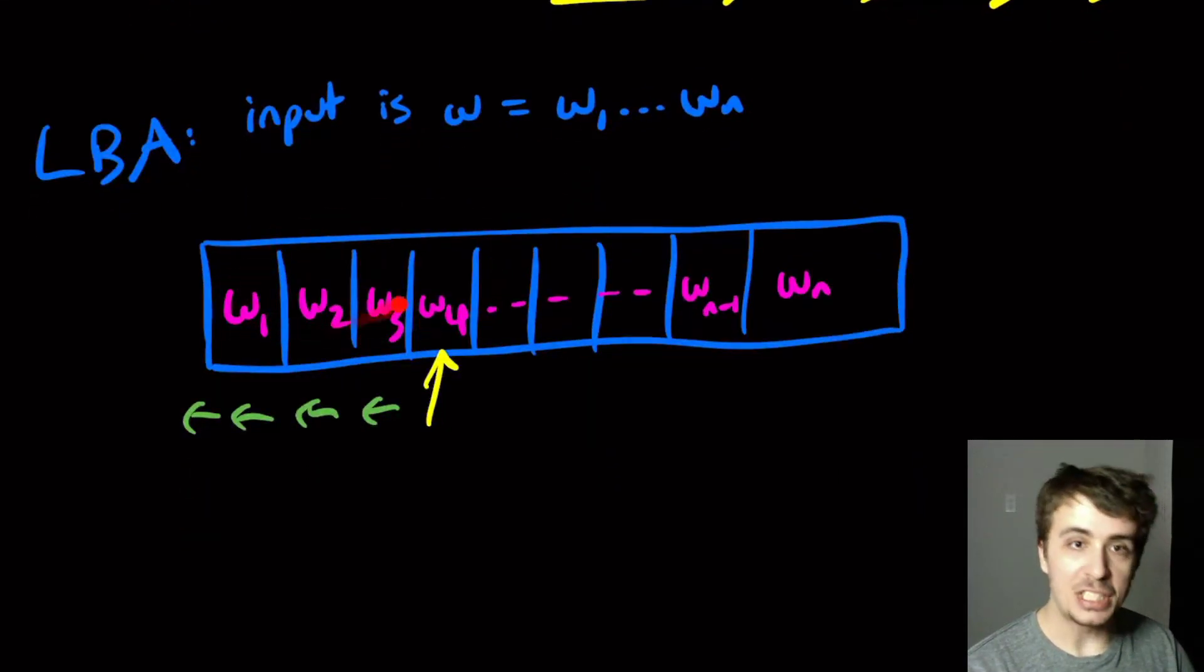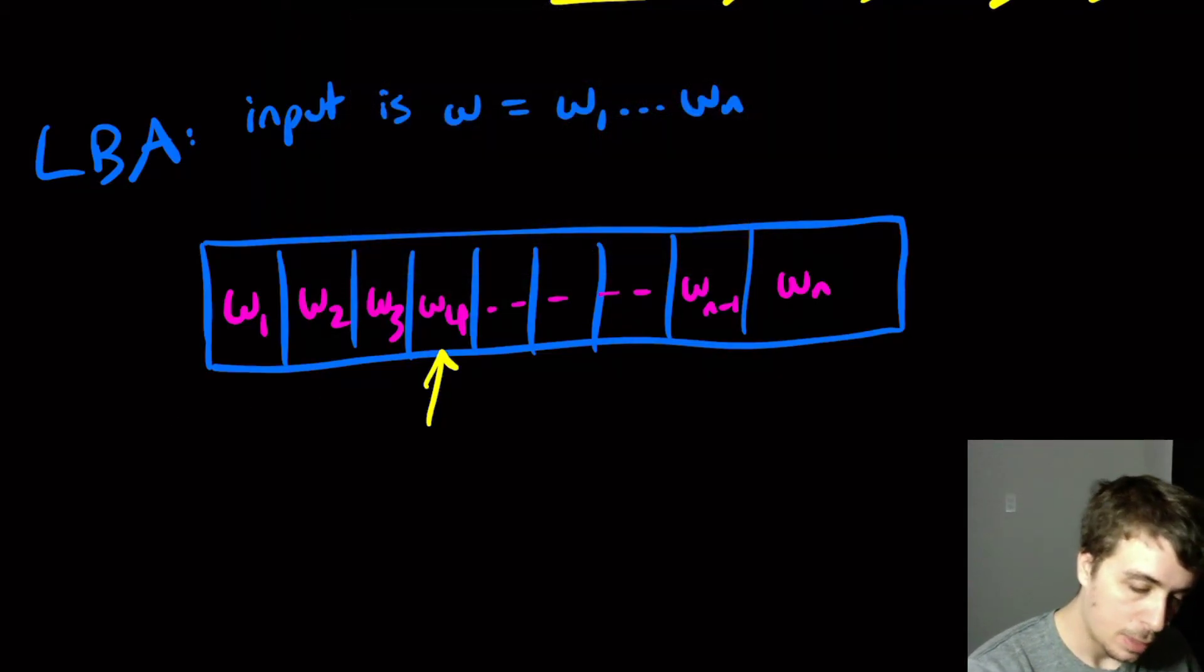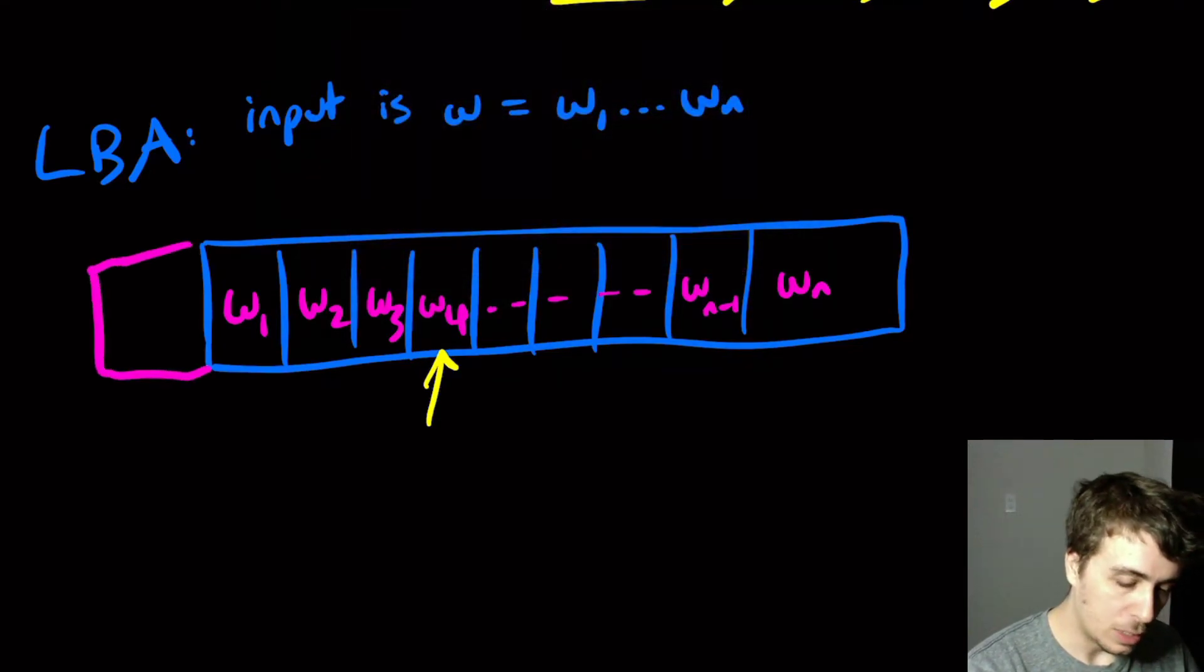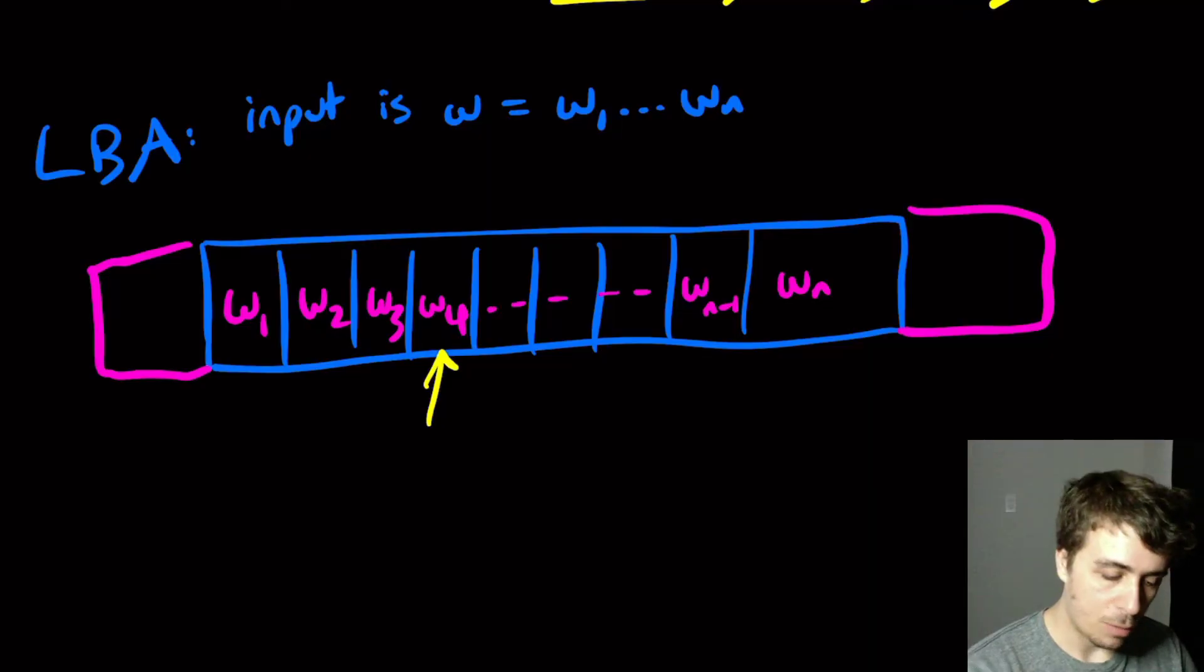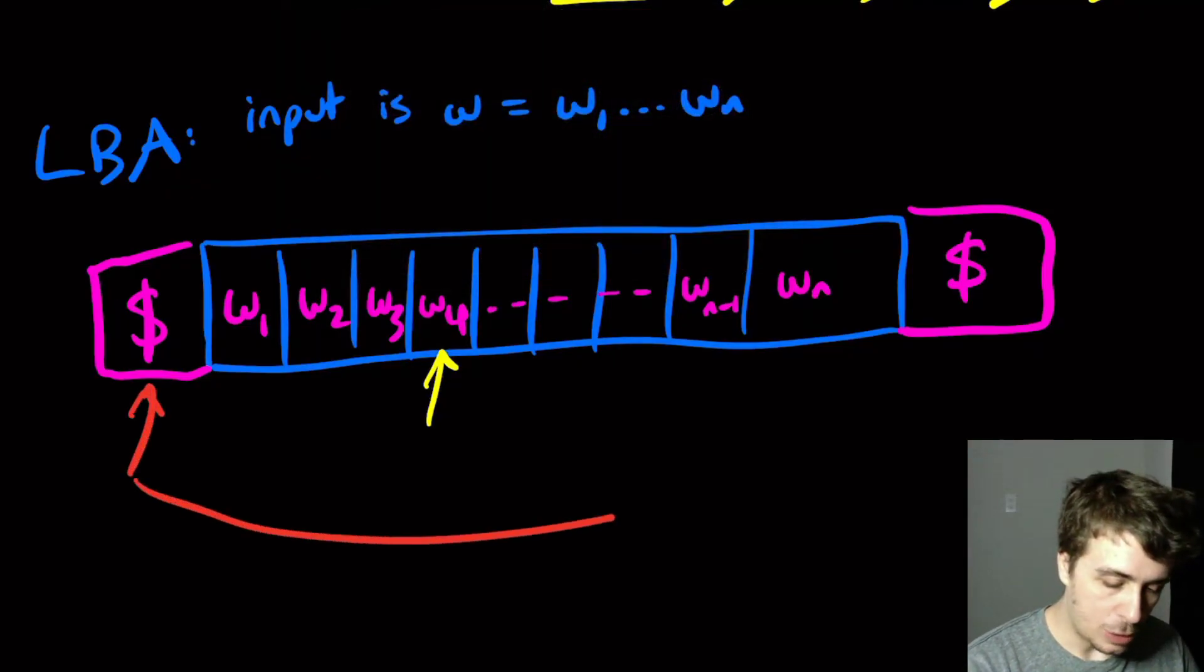So what we're going to allow you to do is we're going to have two special cells, one at the beginning, one at the end. And I'm going to put a dollar sign in them, which are a special character. And it doesn't really matter, but what I'm going to do is I'm going to have these be read-only.